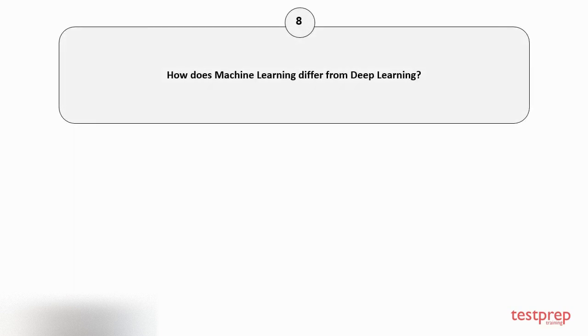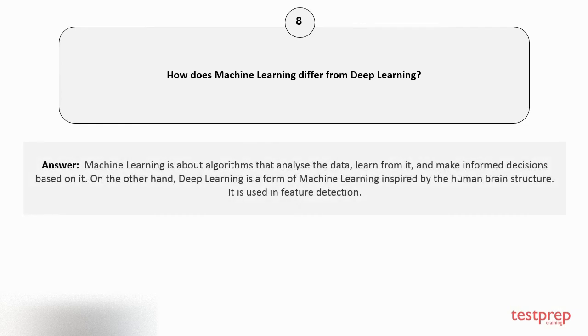Question number eight: How does machine learning differ from deep learning? Machine learning is about algorithms that analyze the data, learn from it, and make informed decisions based on it. On the other hand, deep learning is a form of machine learning inspired by the human brain structure. It is used in feature detection.